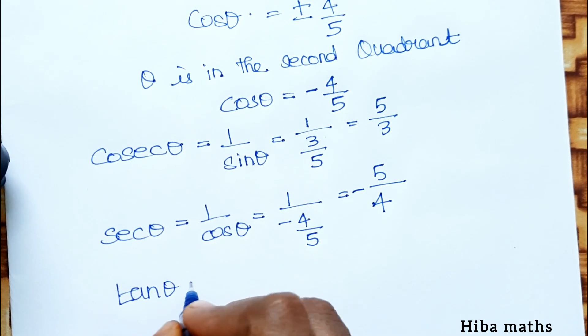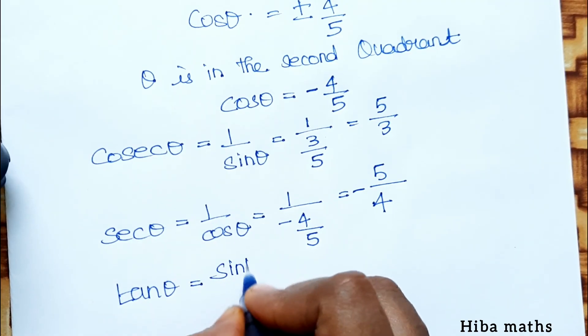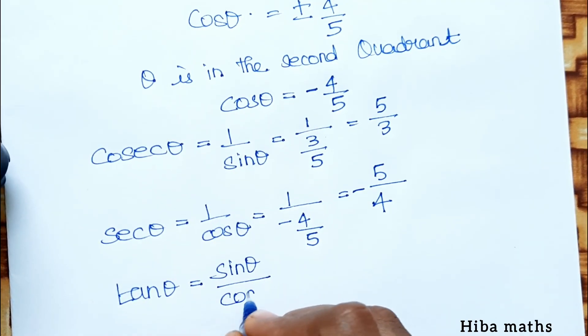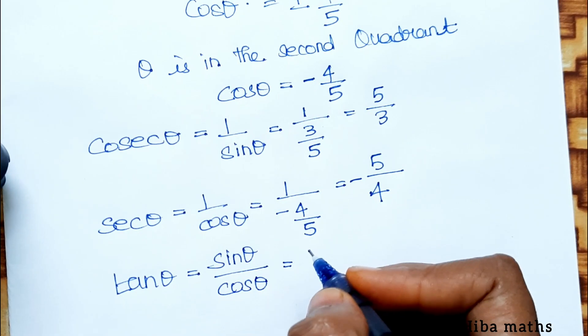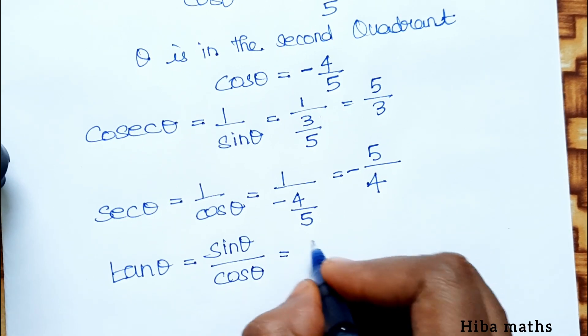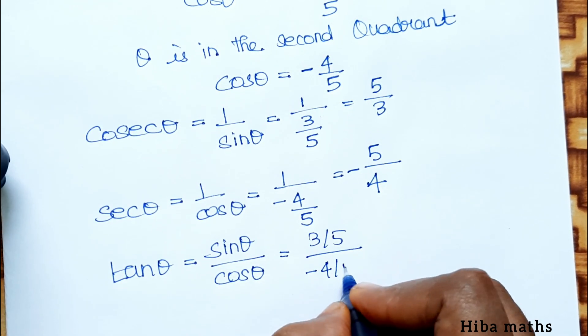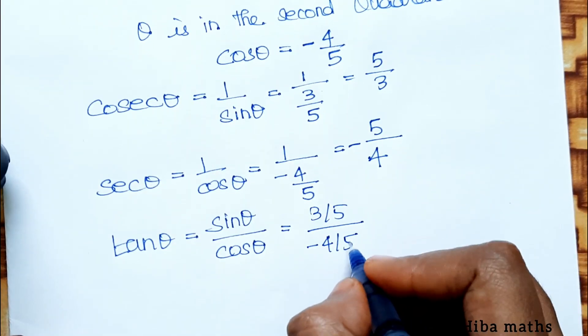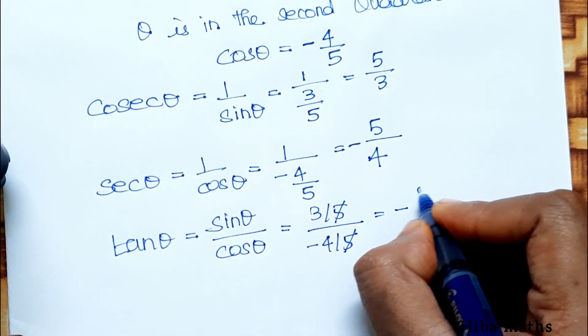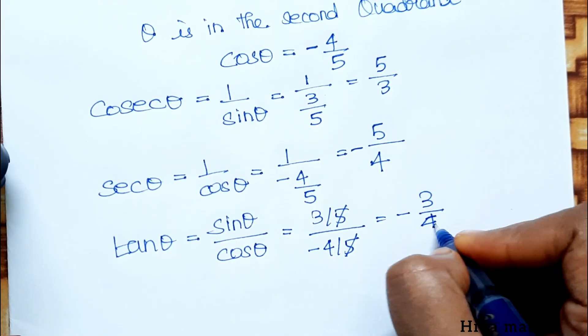Tan θ equals sin θ by cos θ. Now, sin θ value is 3 by 5 divided by cos θ value minus 4 by 5. The 5s cancel, so minus 3 by 4 is the answer.